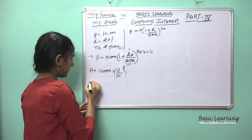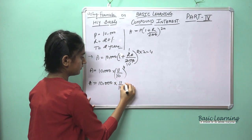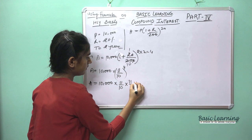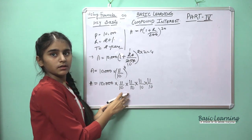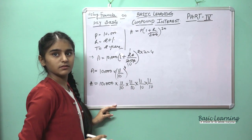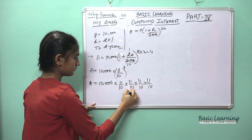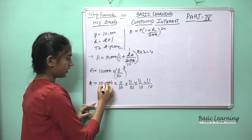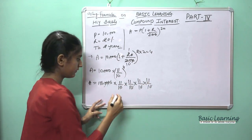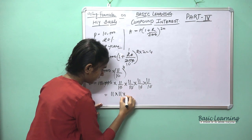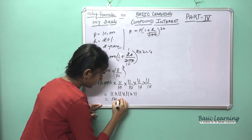Amount = 10,000 × (11/10)^4, meaning we multiply 11/10 four times: 10,000 × (11/10) × (11/10) × (11/10) × (11/10). This equals 10,000 × (11 × 11 × 11 × 11) / (10 × 10 × 10 × 10) = 10,000 × 121 × 121.